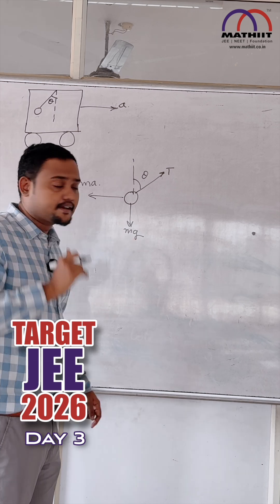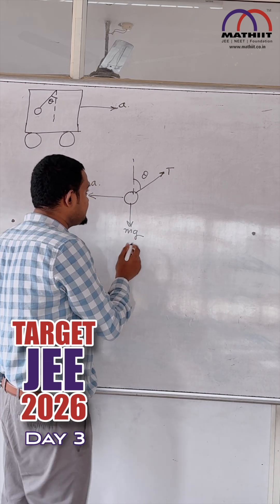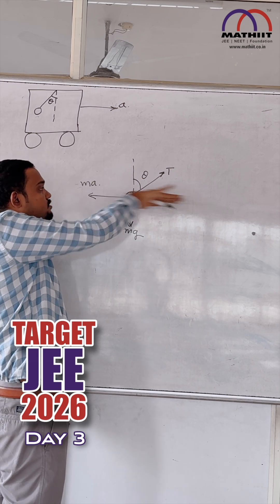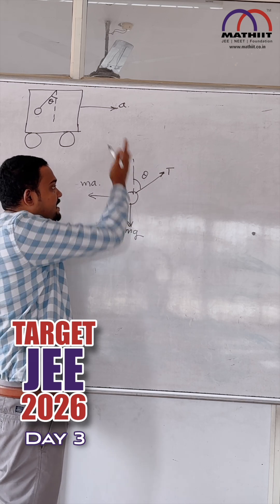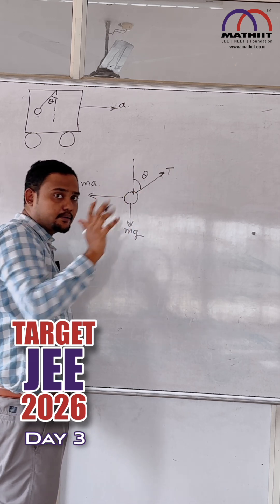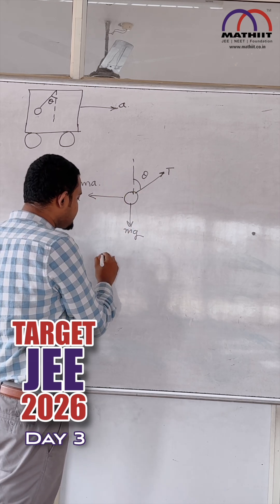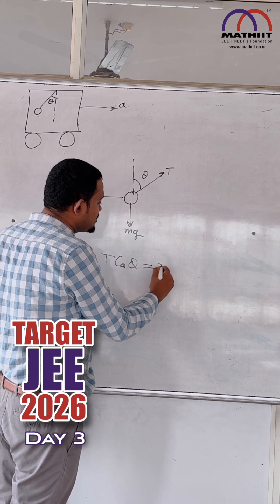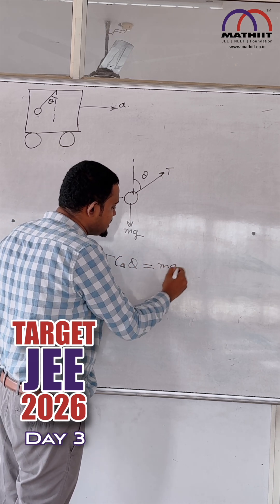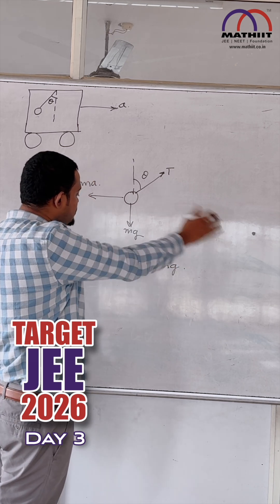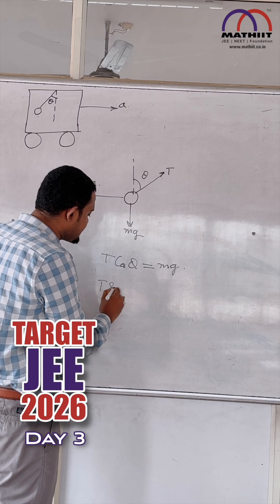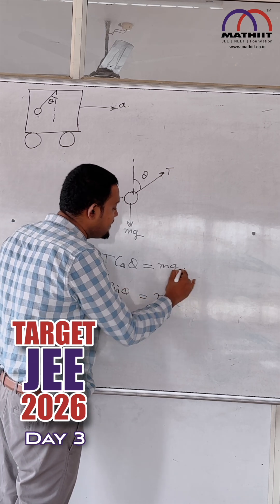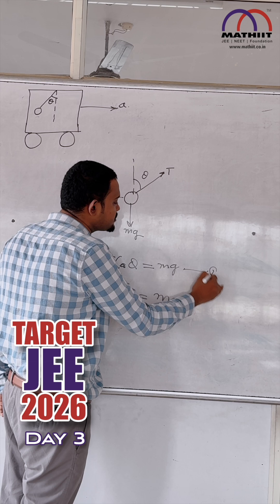So how do we construct our equations? We construct our equations like this: one in the y direction and the other in the horizontal direction — vertical and horizontal equilibrium. So in the vertical direction, T cos theta is going to be equal to Mg. This is equation 1.